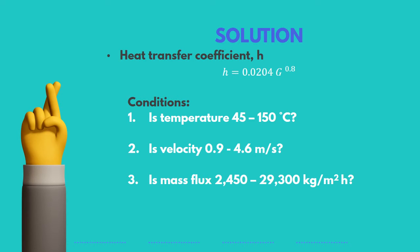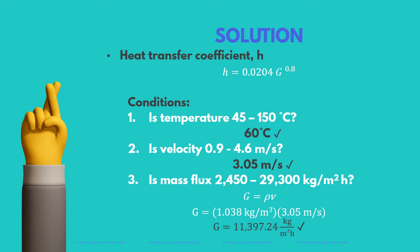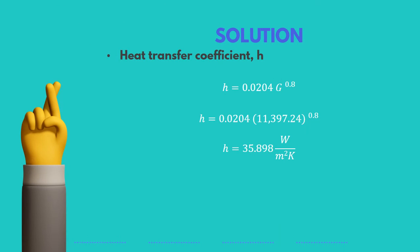The formula for the heat transfer coefficient is only valid under specific conditions: first, the temperature of air must be between 45 and 150 degrees Celsius; second, the velocity of air must be between 0.9 to 4.6 meters per second; and lastly, the mass flux must be between 2,450 to 29,300 kilograms per hour per square meter. Since all of these conditions were met, we can use the formula for H. Solving for H, we get 35.898 watts per kelvin per square meter.